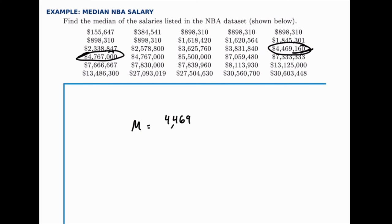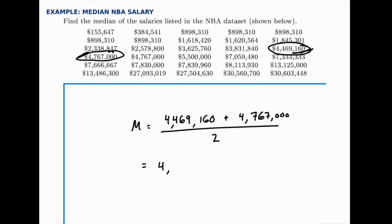The median will be halfway between 4,469,160 and 4,767,000. If we add those together and divide by two, we get 4,618,080 — and that's the median. Half of the players make less than 4,618,000 and half make more. That's the middle data point, and it's a good measure of the center.